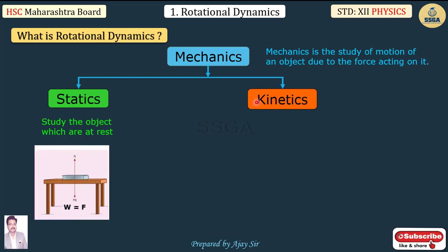For example, a book kept on a table is at rest. There are two forces acting on the book: the gravitational force acting downward, equal to mg, and the normal force that the table exerts upward to prevent acceleration. These two forces are equal in magnitude and opposite in direction, so they balance each other and the book remains at rest or in equilibrium.